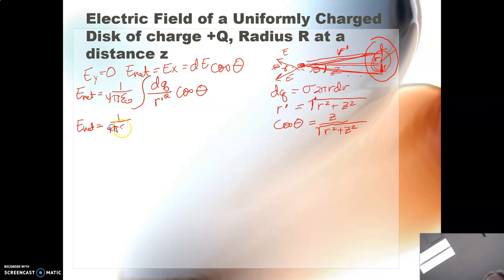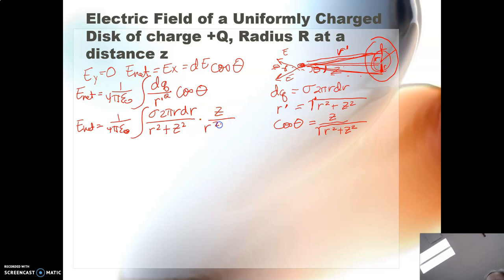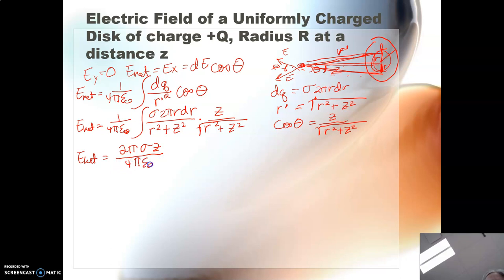So E net is 1 over 4πε₀, the integral of dq — which is sigma times 2πr dr — over r prime squared, which when we square it is r squared plus z squared, times the cosine of theta, which is z over the square root of r squared plus z squared. So 2πσz are all constants, and we're going to pull those out of our integral. On top we're going to have 2π sigma z over 4πε₀, and then we're going to take the integral of r dr all over (r squared plus z squared) to the 3 halves.